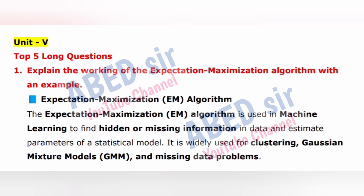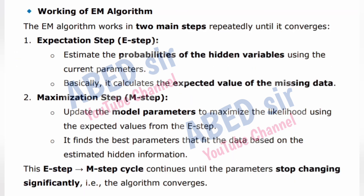The Expectation Maximization (EM) algorithm is used in machine learning to find hidden or missing information in data and estimate parameters of a statistical model. It is widely used for clustering, Gaussian Mixture Models (GMM), and missing data problems. The EM algorithm works in two main steps repeatedly until it converges.